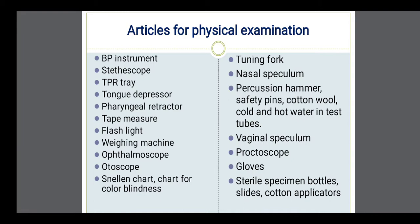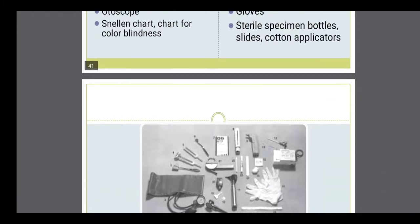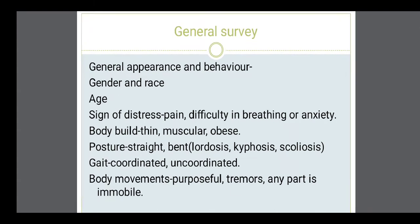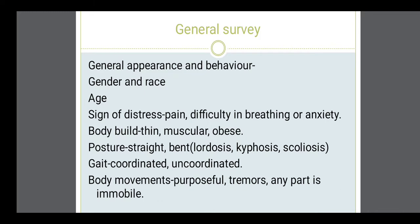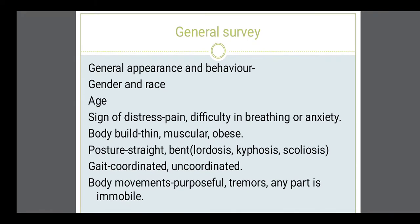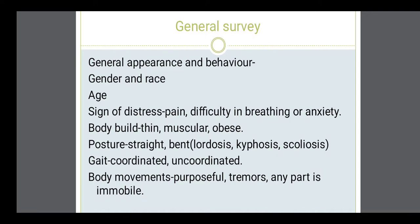The detailed pictures of the physical examination articles I will show in the next class. Now, how to proceed for the physical examination. When doing examination in a simplified manner, remember that first we have to do a general survey or general appearance. General appearance includes the general appearance of the person, their behavior, and age. It includes signs of distress — whether the patient is having pain, difficulty in breathing, or is anxious. Then you can find out nourishment.